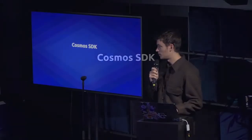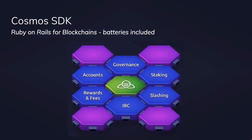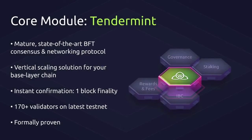A quick wrap-up on the Cosmos SDK: it is a set of modules to build a blockchain. They're all interchangeable, even the core one, which is Tendermint. It has one block finality, and in the most recent testnets we've had 170 to 200-plus validators. We are working on furthering the formal verification within Tendermint — the consensus has already been formally verified, but not the protocol. One of the coolest things within the Cosmos SDK is that you can actually swap out Tendermint for other consensus networking layers, such as HoneyBadger, or even Libra. Libra follows some of the same philosophy behind the ABCI, so you could actually run a Cosmos SDK-based chain on top of Libra's consensus and networking.